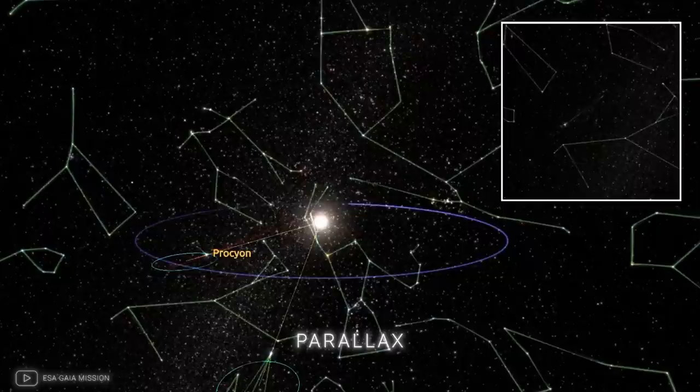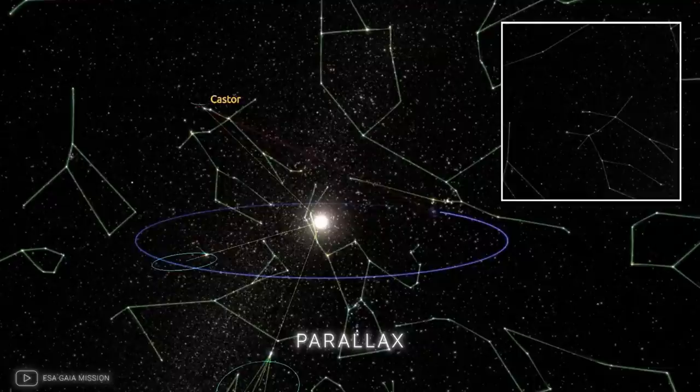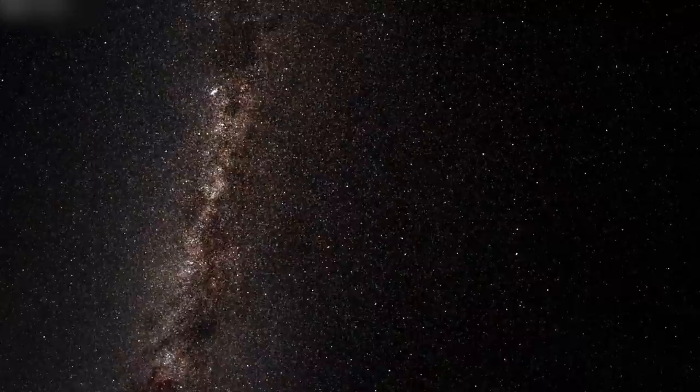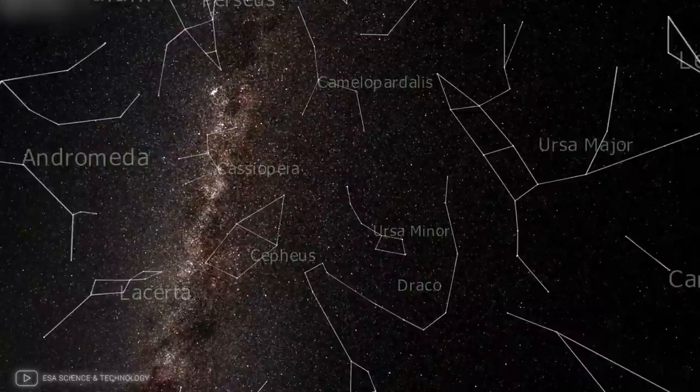It happens due to the fact that at different times of the year, Earth is in a different position in its orbit, resulting in slightly different viewpoints for nearby stars. The amount of parallax observed for each particular star depends on its distance from Earth.